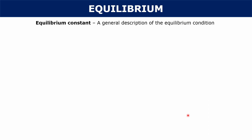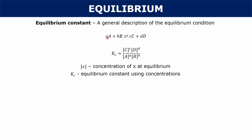The equilibrium constant is a general description of the equilibrium conditions — it tells you whether you have a lot of products, a lot of reactants, or somewhere in between. For a reaction A plus B in equilibrium with C and D, the equilibrium constant is the concentration of C to the power c times the concentration of D to the power d, over the concentration of A to the power a times the concentration of B to the power b. So it's all your products over your reactants, where those brackets represent concentrations in molarity.